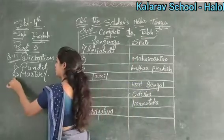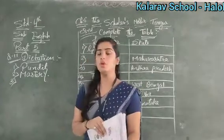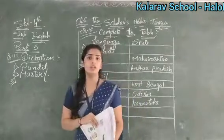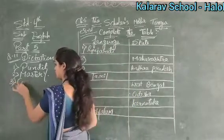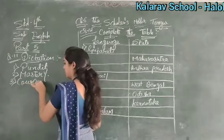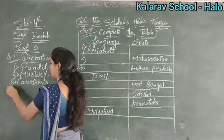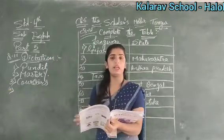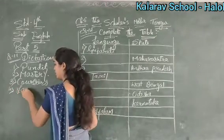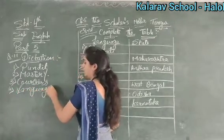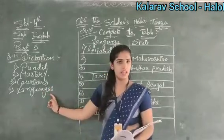Now see what is the third number? It is given: Courtiers. Courtiers means the persons who are associated with the court — all those persons are known as courtiers. Clear? Now see what is the fourth word? You will write: Languages. The spelling of languages is L-A-N-G-U-A-G-E-S. Clear?